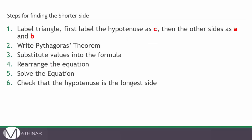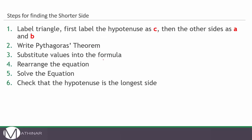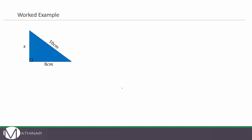These are the steps for finding the shorter side. First we need to label the triangle — first C and then A and B. Then we write down Pythagoras' Theorem: A squared plus B squared equals C squared. We substitute the values into the formula, we rearrange the equation, and then we solve the equation to get our answer. At that point you just want to make sure that the hypotenuse is the longer side, so we do a quick check at the end.